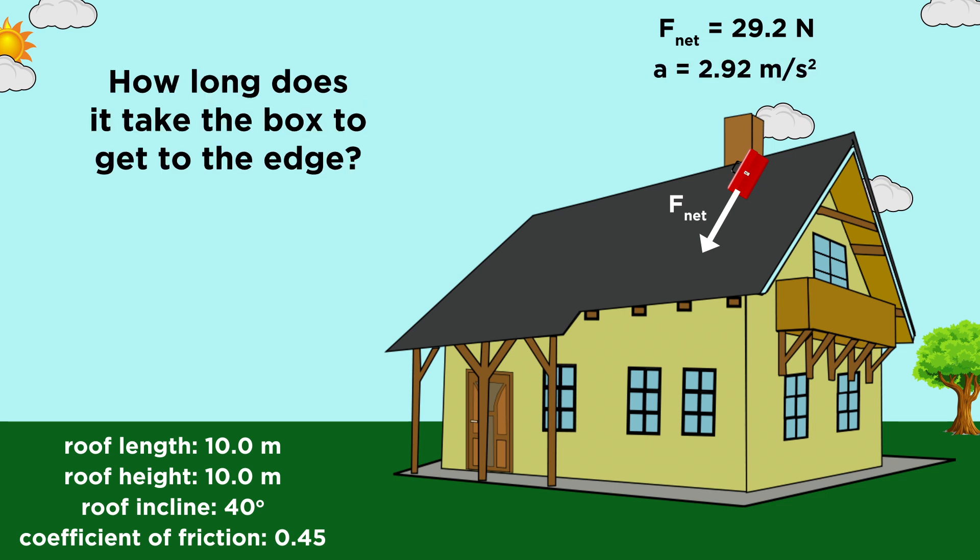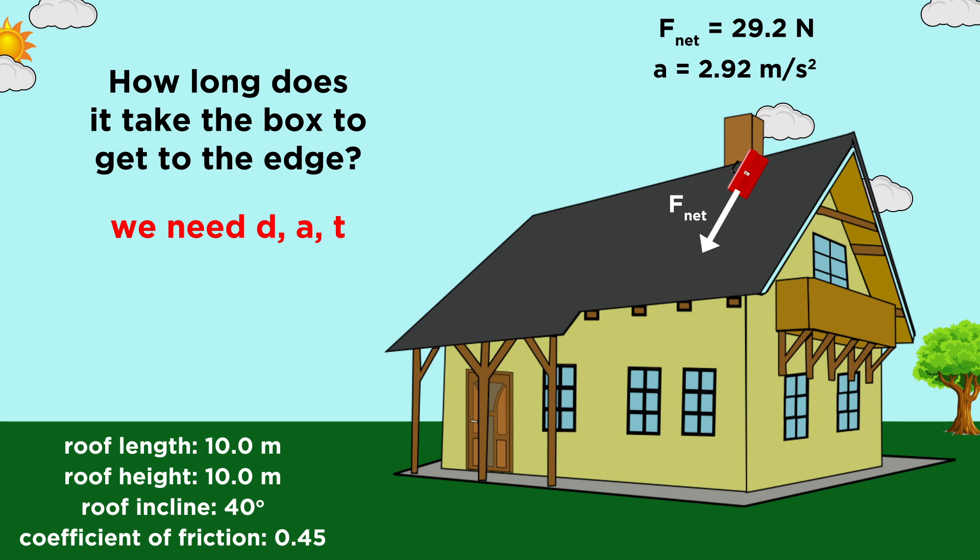Lastly, given this acceleration, how long will it take for the box to reach the edge of the roof? We need an equation from kinematics that has distance, acceleration, and time. So let's use this one. Ten meters goes here, the initial velocity is zero, so this term goes away, and the acceleration is what we just calculated. We rearrange, take the square root, and we get two point six two seconds for T. That'll get the box to the edge of the roof.